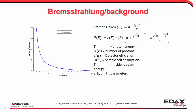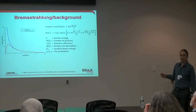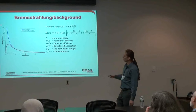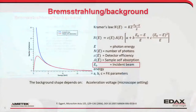To break it down: we have the photon energy, the detector efficiency we scale by, the sample self-absorption we scale by, and then it's basically a series expansion of Kramers' Law. If we look at Kramers' Law — the blue line — and then look at a model with absorption included, we get closer to something like what we actually see.